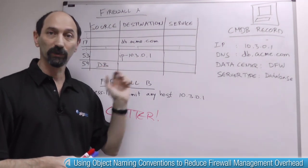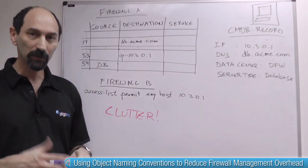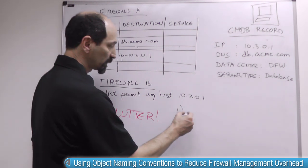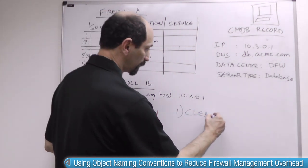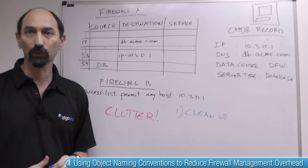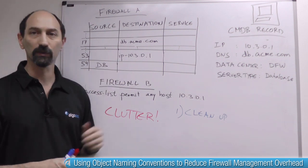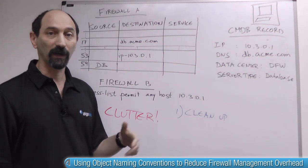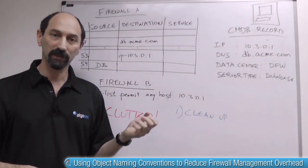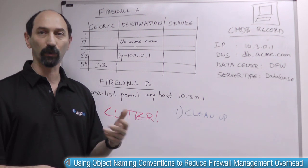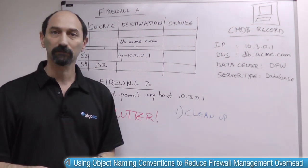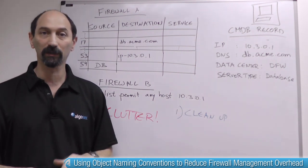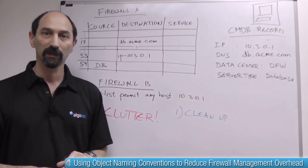So what can you do to reduce this problem? I can suggest a few tips. The first is to clean up. You could use software to process your firewall rules and search for duplicate definitions — find multiple objects with different names that refer to the same IP address, report on them, and then standardize and clean them up. That's definitely a good idea to get to a nice steady baseline.